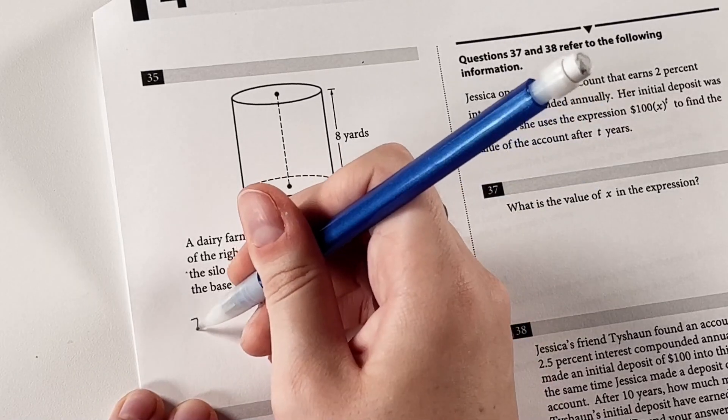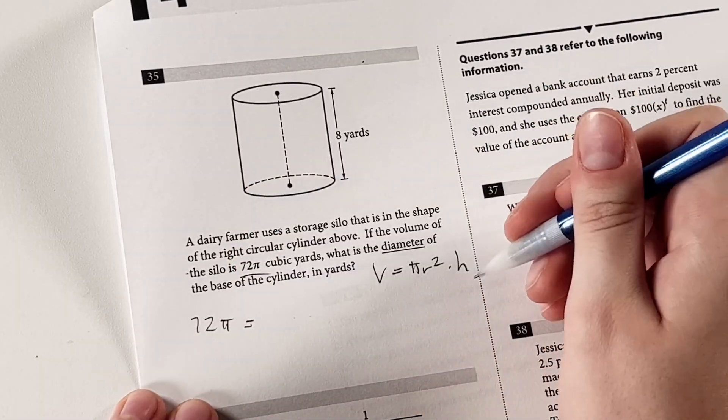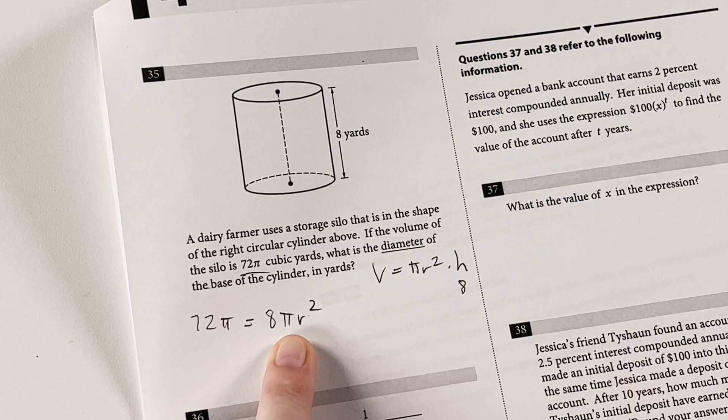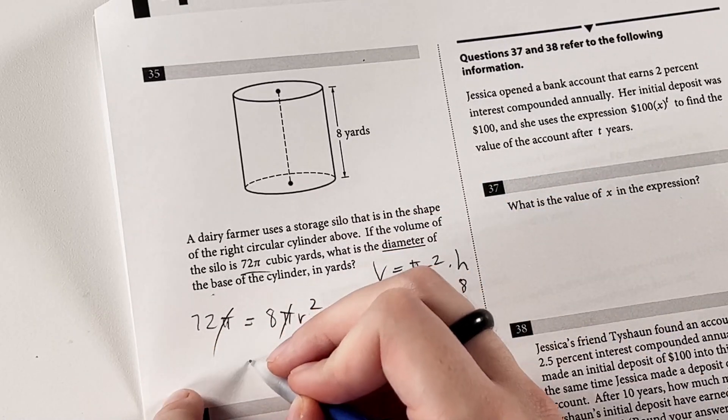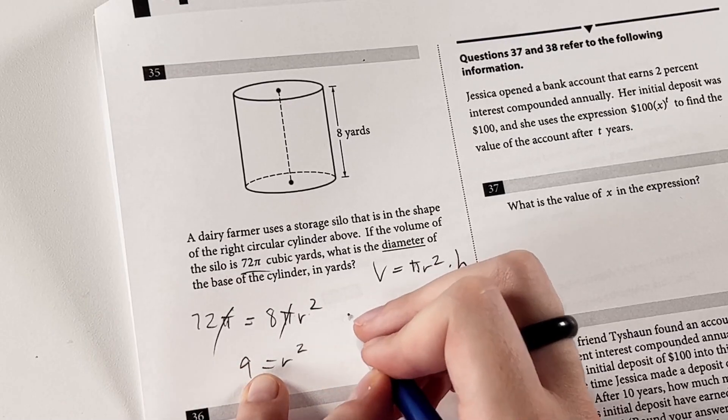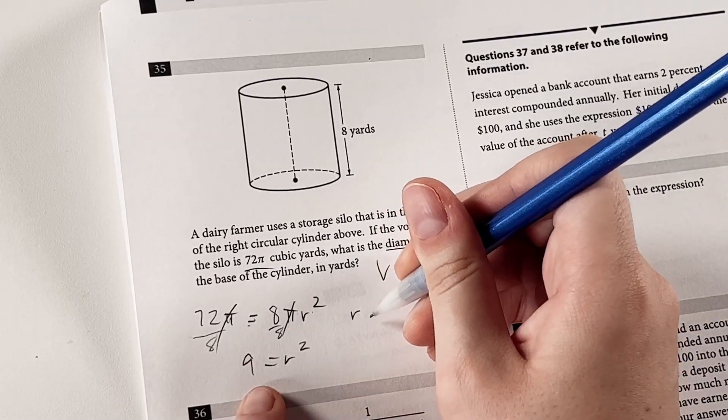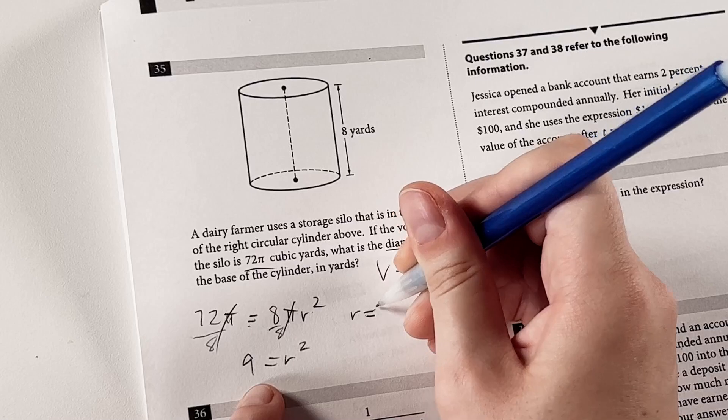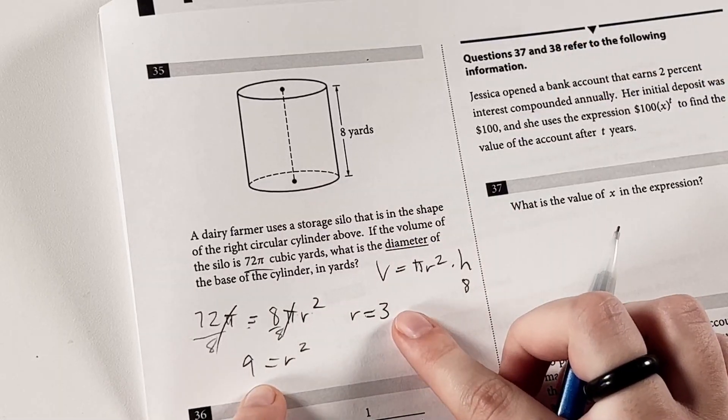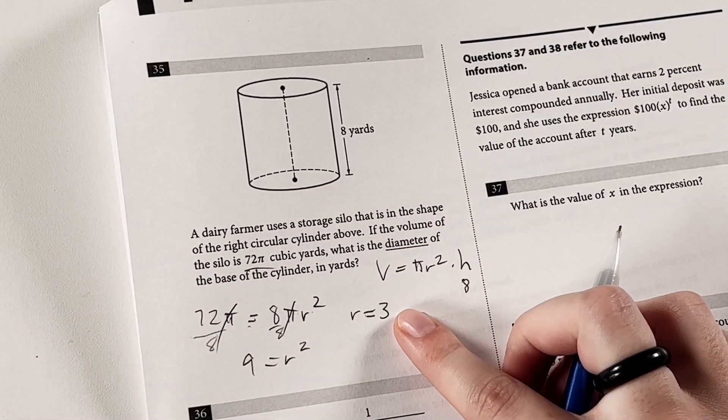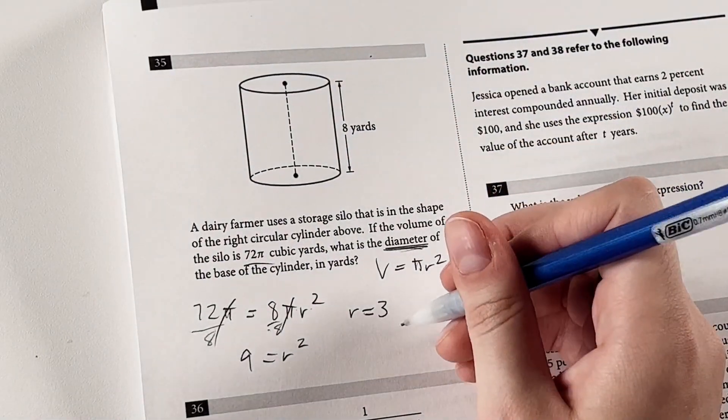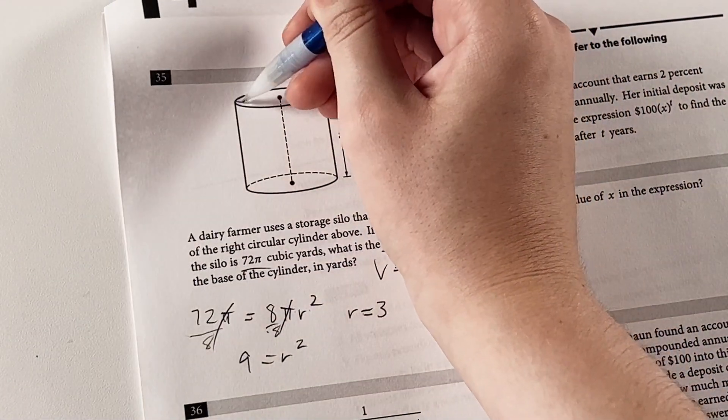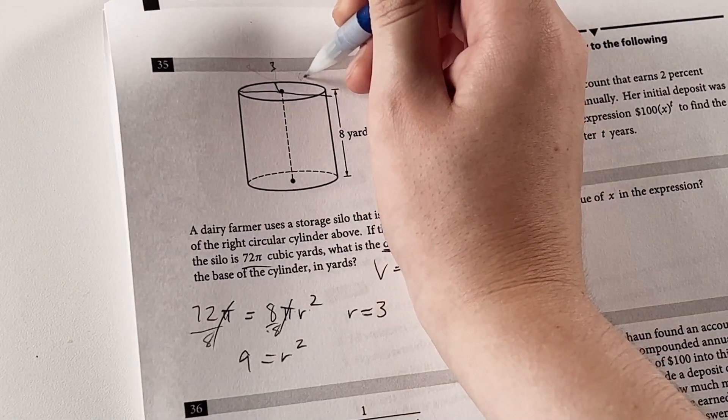We know the volume is 72 pi, and then we know that our height is 8 yards. We can plug that in for h. Now look what happens. Our pi's cancel out, and 72 divided by 8 is 9. That's equal to the radius squared then. So we know our radius is plus or minus 3, or in this case we can't have a negative radius, so just 3. But be warned, they're looking for the diameter of the base of the circle. They even underlined it for us so we don't screw that up. So the diameter is just twice the radius. So if a radius is 3, the diameter will be 6.